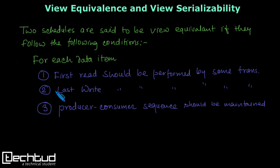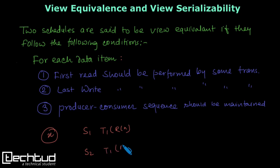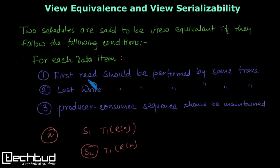We have three conditions. For each data item, the first condition is: the first read should be performed by the same transaction. So if we have data item x, and in schedule s1 transaction t1 is performing the first read on x, then in schedule s2 also transaction t1 should perform the first read on x.